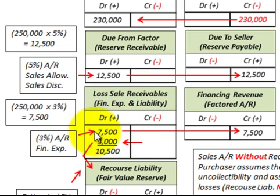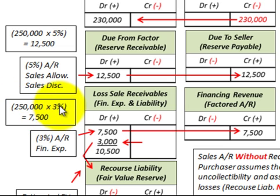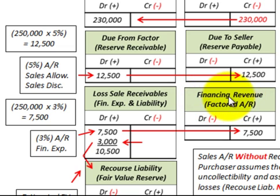At this point, the treatment is the same with recourse and without recourse. We include a financing expense that Bank B charges Corporation A on these accounts receivable — 3% of the accounts receivable. So 3% times $250,000 gives us $7,500. Corporation A debits the loss on sales for $7,500, and Bank B credits it for $7,500, recognizing it as financing revenue on these factored accounts receivable.